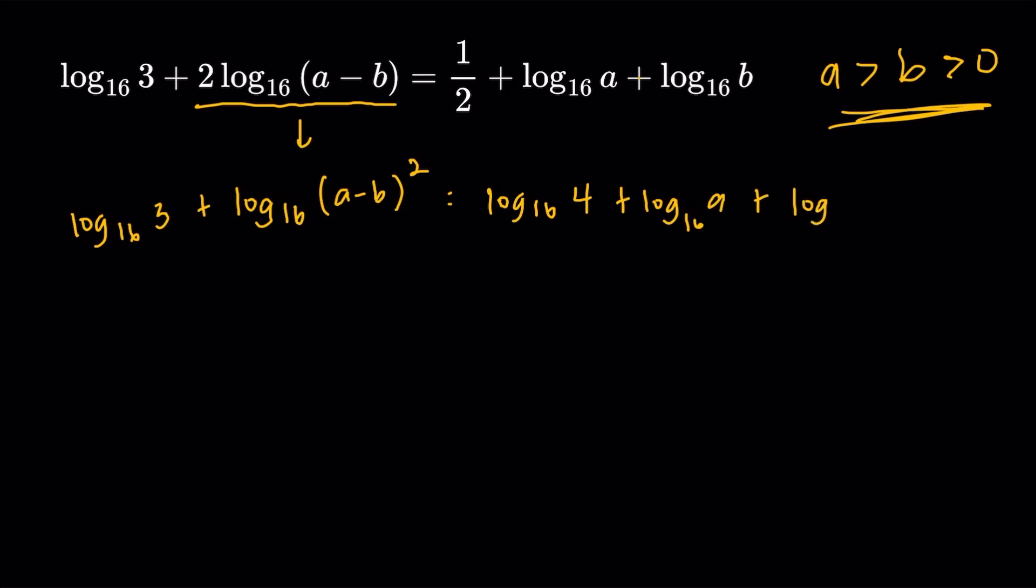Now, we can use the product rule or the addition rule that I mentioned a while ago. We can put these two logarithms... We could rewrite the left side and the right side as just one logarithm with base 16. The left side just simply multiply 3 and the square of a minus b. And then the right side simply 4a and b multiplied together. So just 4ab like this.